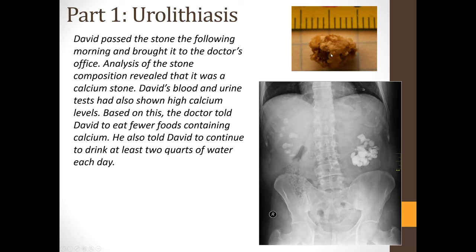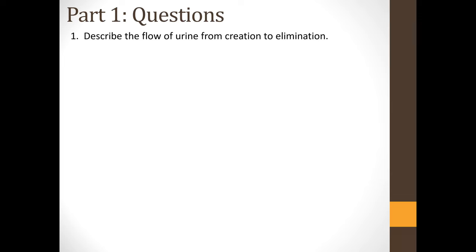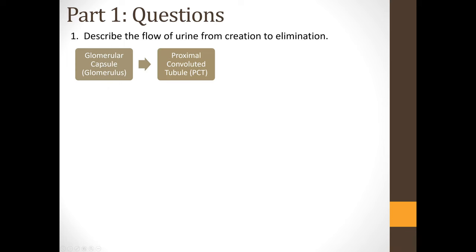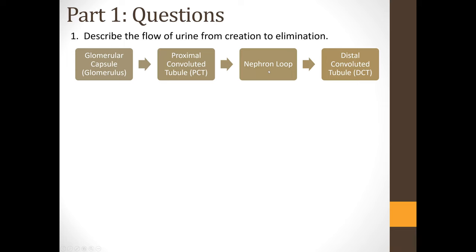Question 1: Describe the flow of urine from creation to elimination. The process starts in the glomerular capsule, in the network of capillaries called the glomerulus, taking place inside the nephron, which is the working unit of the kidney. Once blood passes through the glomerulus, it is filtered and the filtrate travels to the proximal convoluted tubule, then into the nephron loop (also called the loop of Henle), and then into the distal convoluted tubule. All of these structures together make up the nephron, the functional unit of the kidney.